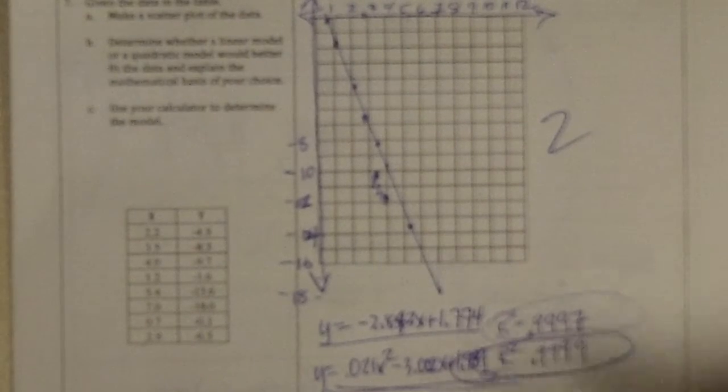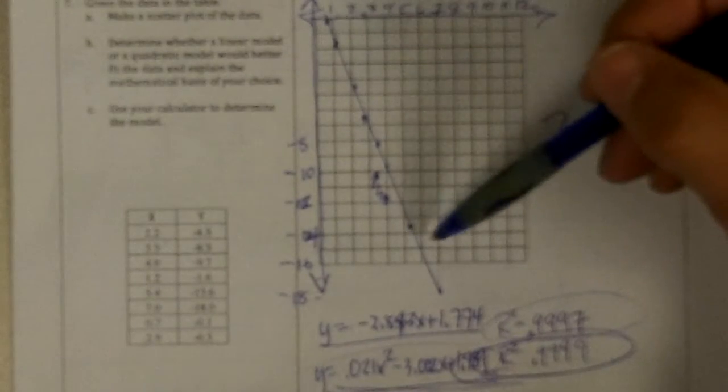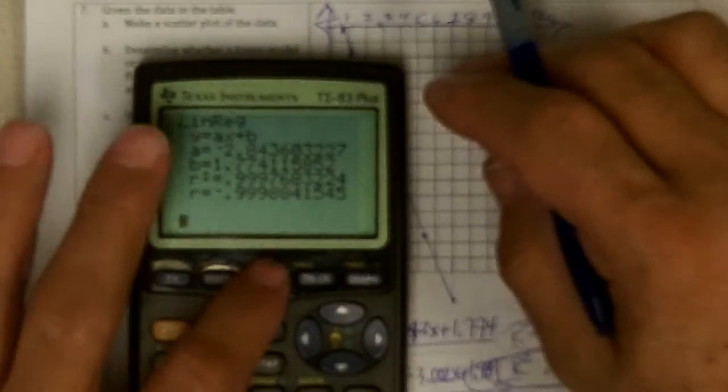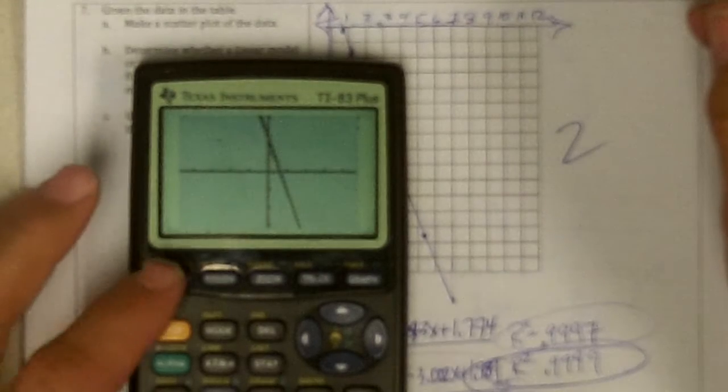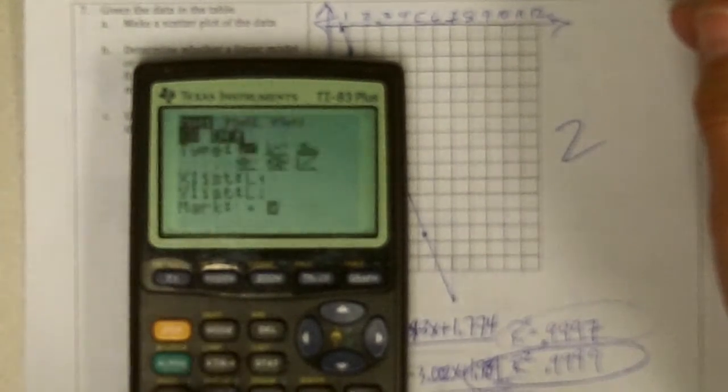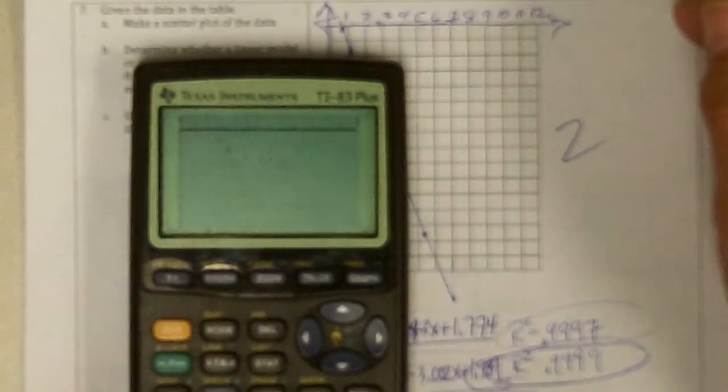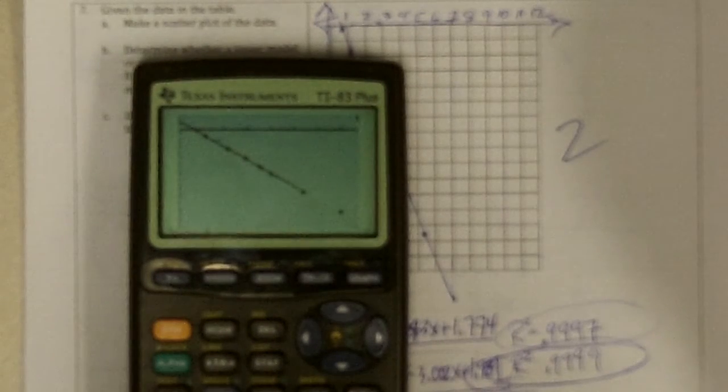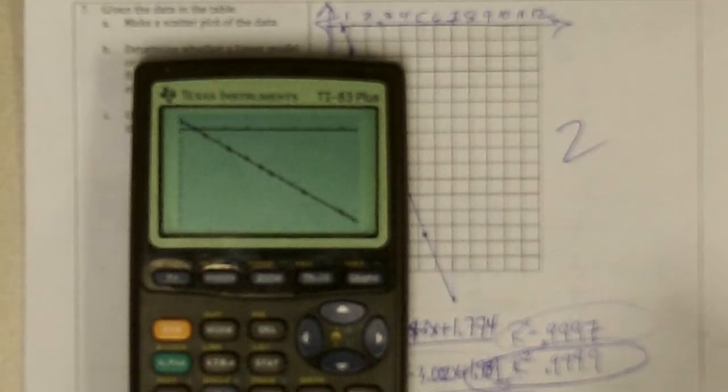Now, which is better? Well, based on the R squared, the quadratic would be better. If you said they both fit really well, let's take a look at the graph of these. And zoom 9 for statistics. Oops, I didn't turn a stat plot on. So, second Y equals stat plot, turn it on using list 1 and 2. Now, let's go zoom 9. There's the data and the line, and then here's the parabola, and you really can't tell them much difference from the graph.